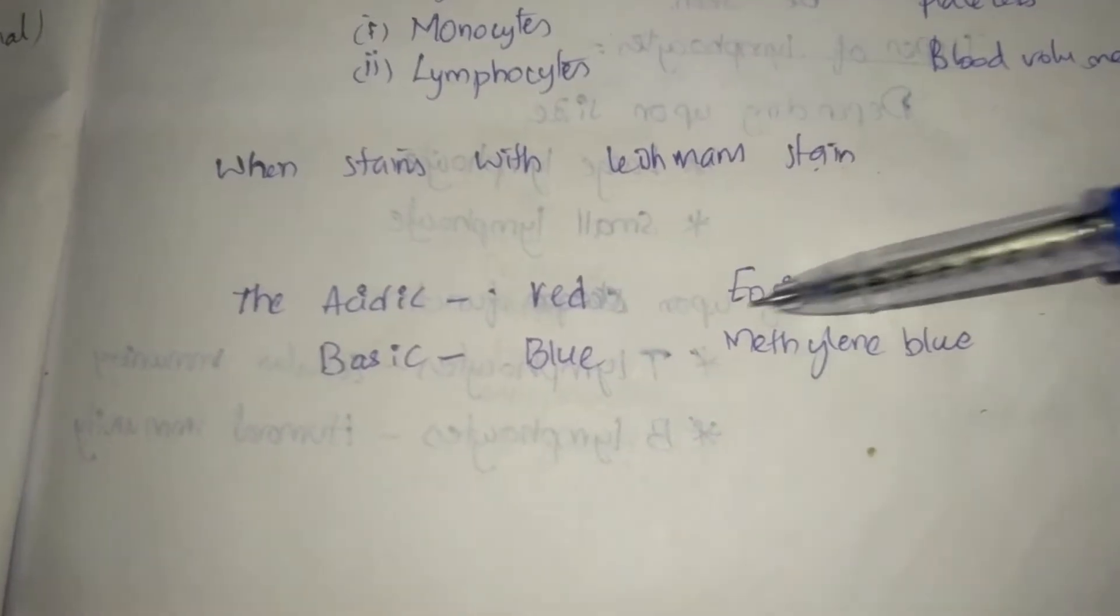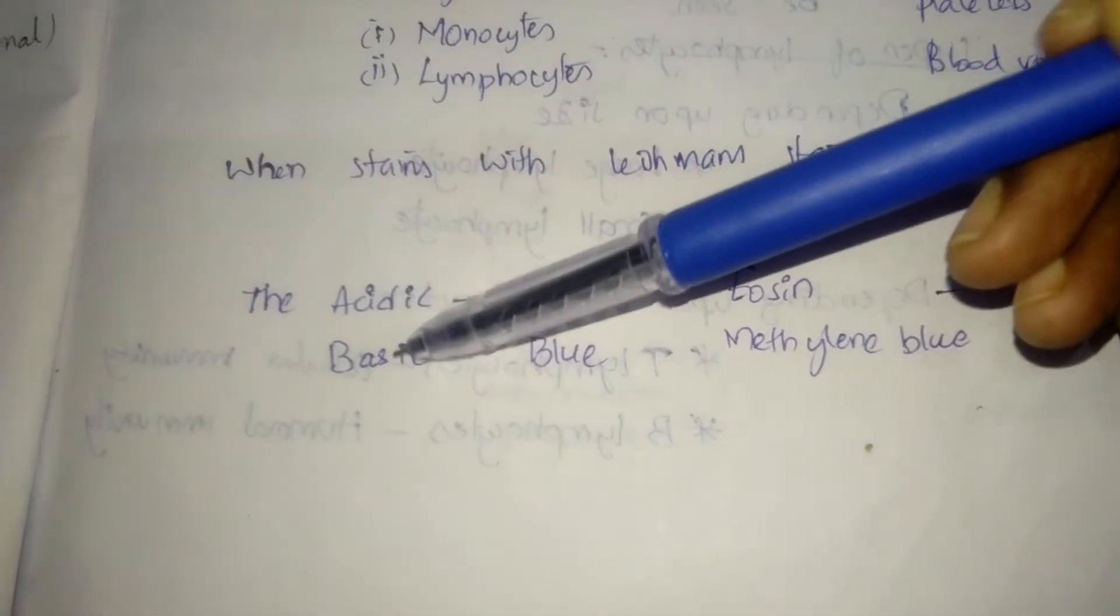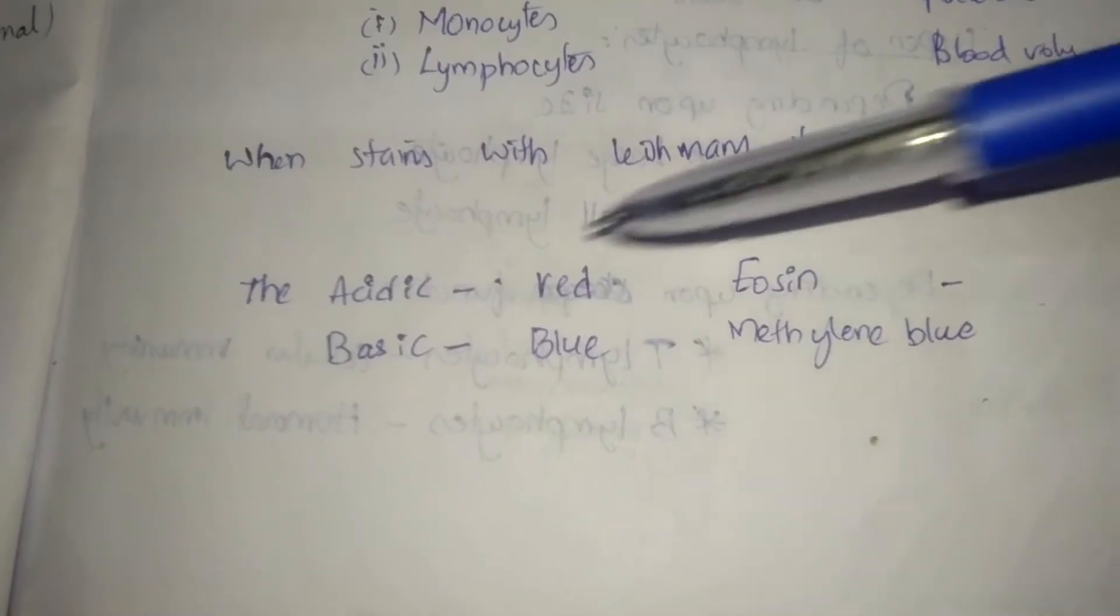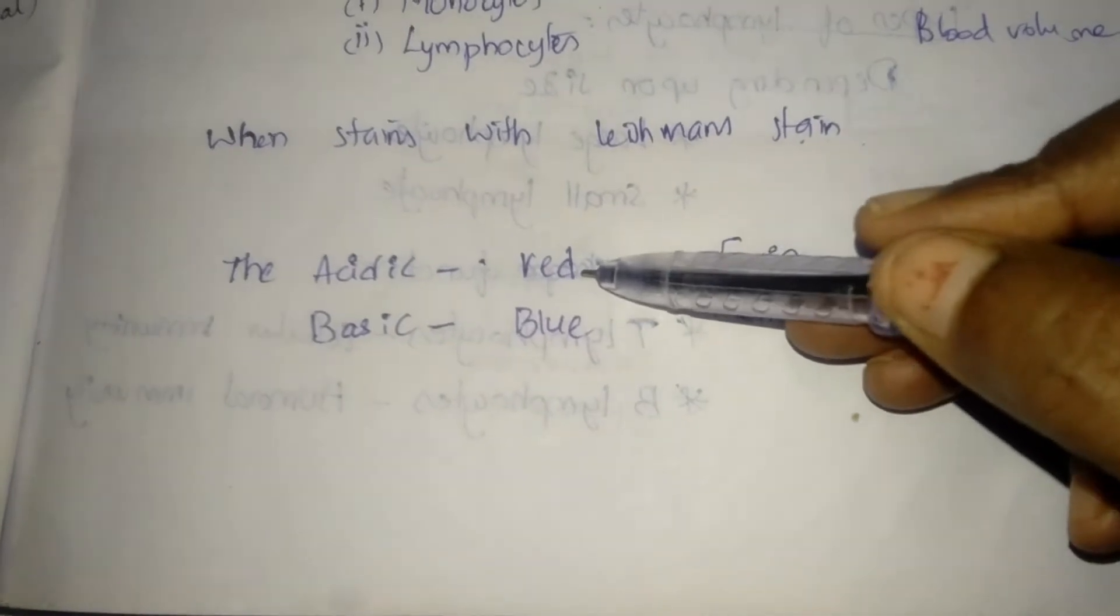Eosin is red color. So eosin acidic acid is red color. Basic stain is blue color. So methylene blue is blue color. So when you choose red or pink or blue, when you mix these two, you get purple.